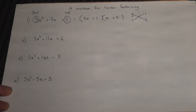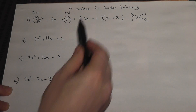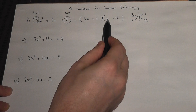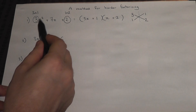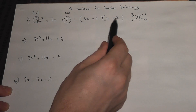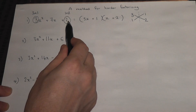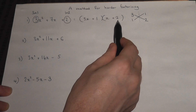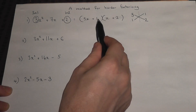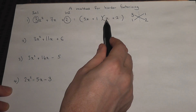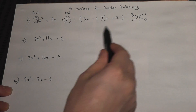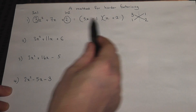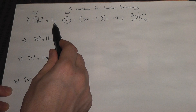To show how this works: 3x times x is 3x squared, 1 times 2 is 2, 3x times 2 is 6x, 1 times x is x, and 6x plus x is 7x.